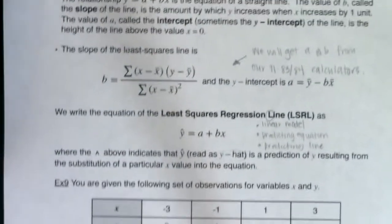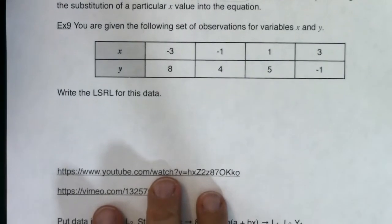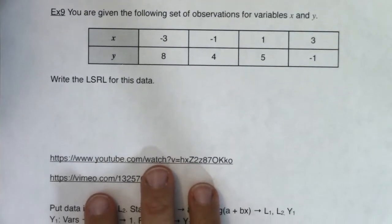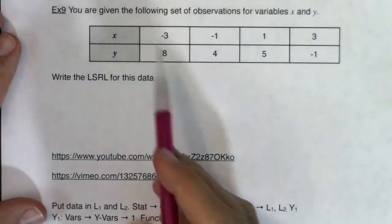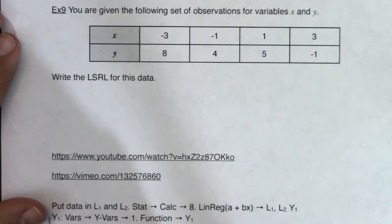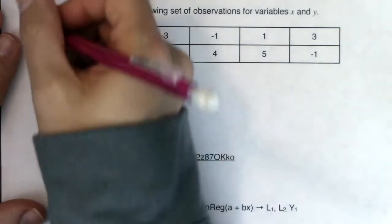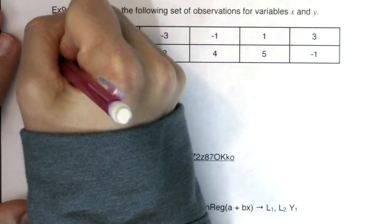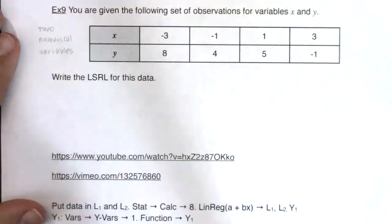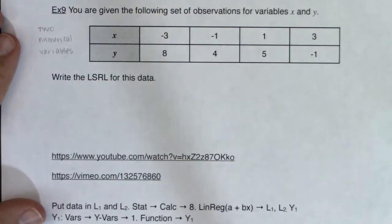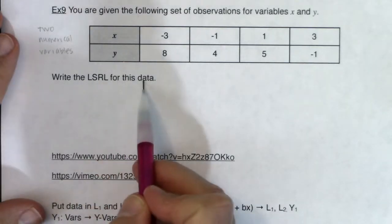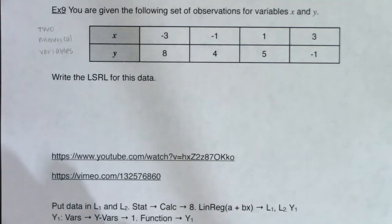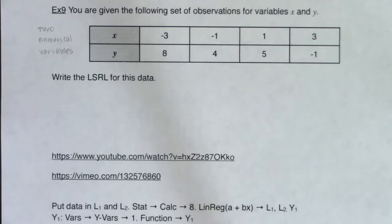Let's look at example 9. Given a set of observations for variables x and y — two numerical variables — we've seen this dataset back in example 5. The directions say: write the LSRL for this data. I'll pause and fire up the calculator to show you how it gets all of this for you.